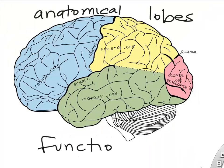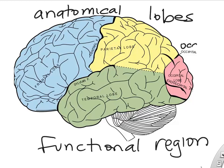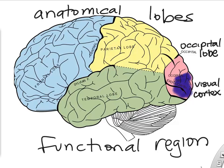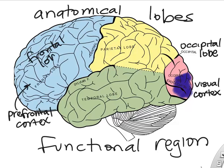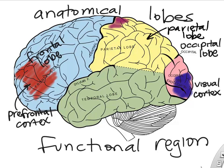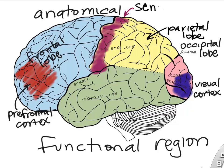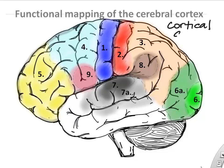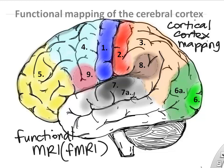We can divide the cerebral cortex into anatomical lobes — frontal, parietal, occipital, temporal — or into functional areas. The occipital lobe has the visual cortex; the frontal lobe has the prefrontal cortex, involved in motivation, higher thinking, dreams and hopes; and the parietal lobe has the sensory cortex, which processes sensory information. Functional mapping is sometimes done using functional MRI to track blood flow changes in the cerebrum while a person does or thinks about something.